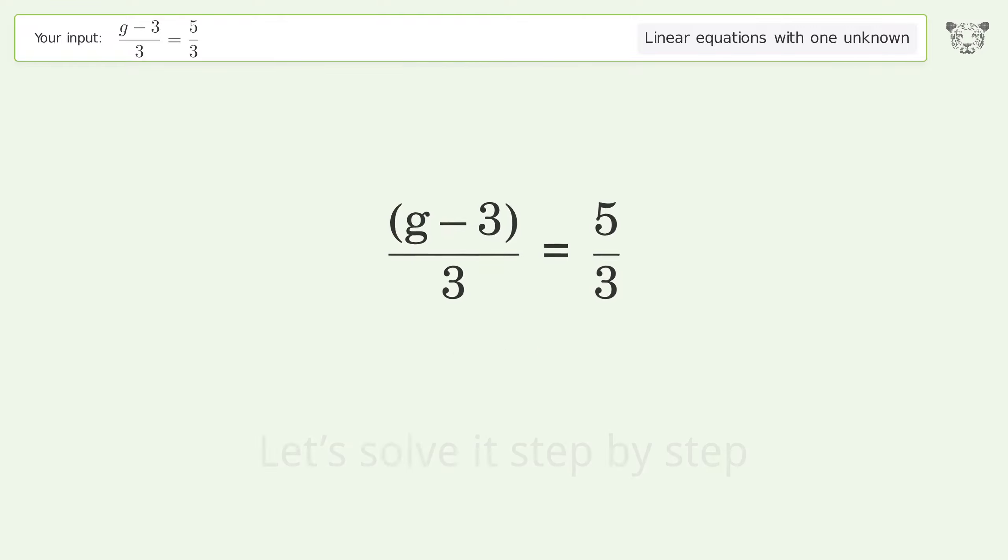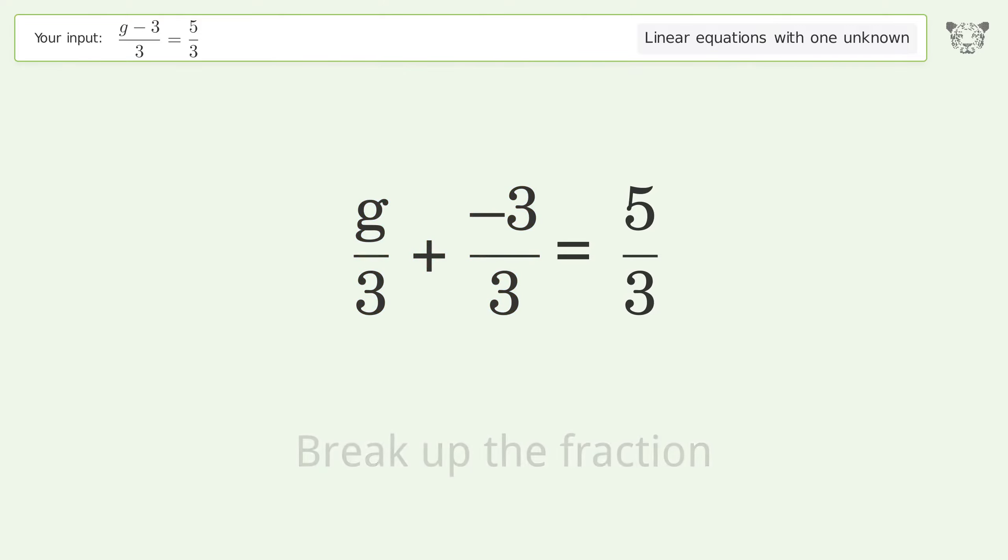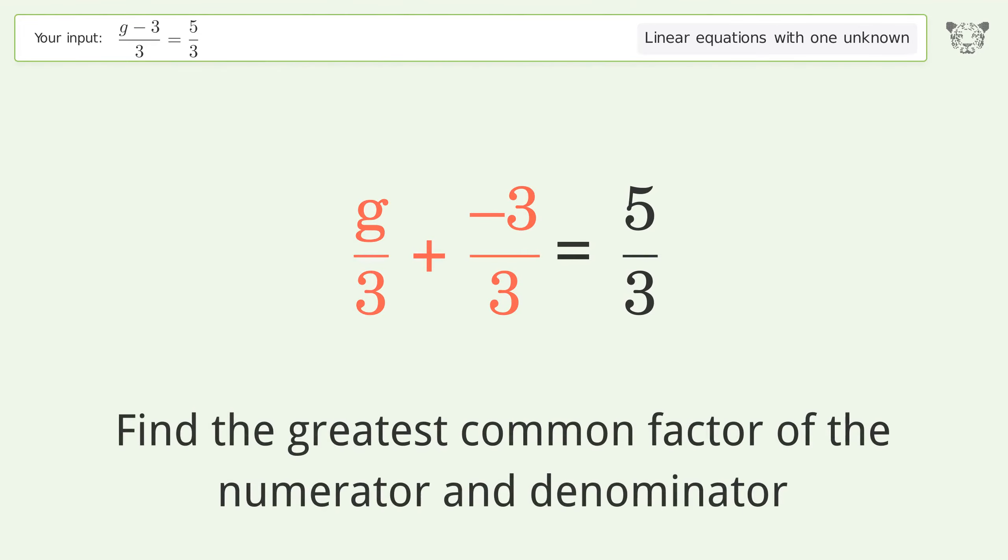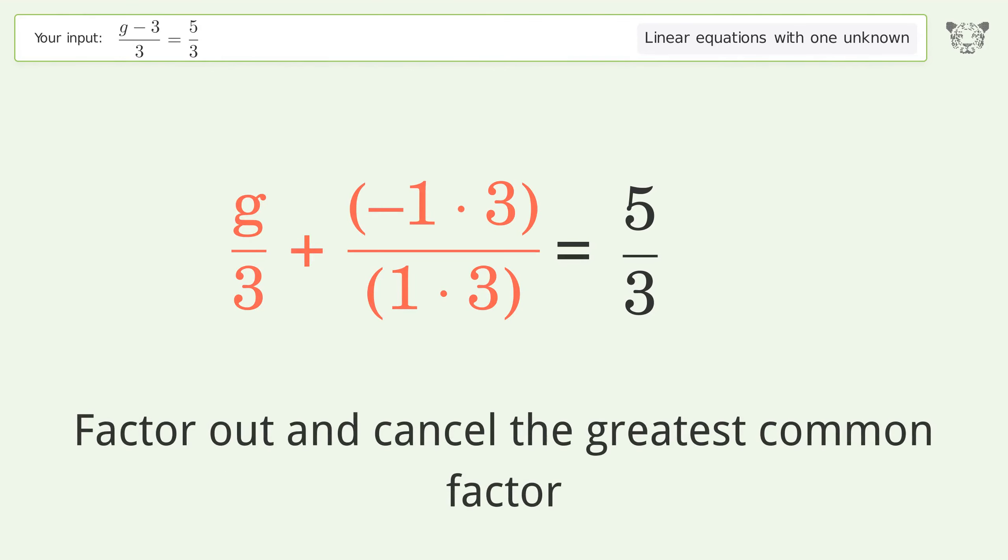Let's solve it step by step. Simplify the expression. Break up the fraction. Find the greatest common factor of the numerator and denominator. Factor out and cancel the greatest common factor.